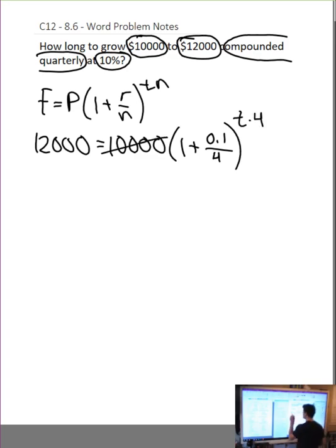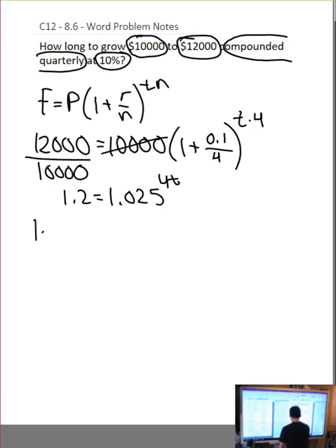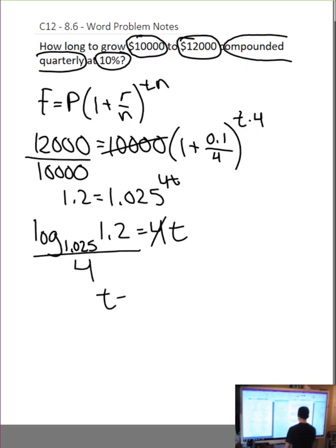Please review word problems in the last chapter, exponentials, to understand those better. t times 4. So if I divide both sides by 10,000, I get 1.2 equals 1.025 to the 4t. Now I can change to exponential form. Log form, excuse me. Log, the base of the exponent, is the base of the logarithm. And then I can simply divide both sides by 4.